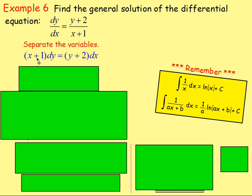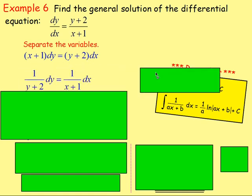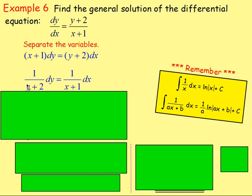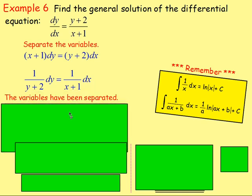From there, we need x on one side and y on the other. So let's divide both sides by y plus 2 and divide both sides by x plus 1. That will then give us 1 over (y plus 2) dy equals 1 over (x plus 1) dx. The variables have been separated.